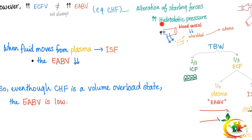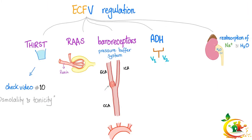You have alteration of Starling forces — increased hydrostatic pressure in the vessel moves fluid outside to the interstitial space, causing pitting edema. When fluid moves from the vessel to the interstitial space, the effective arterial blood volume goes low. So even though CHF is a volume overload state, the effective arterial blood volume is low. To regulate the extracellular fluid volume, we depend on those five mechanisms.